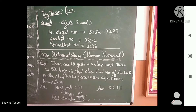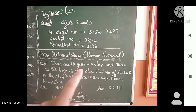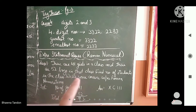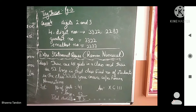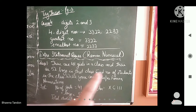Next is an extra statement question based on Roman numerals. I am going to read the statement first. There are 41 girls in a class and there are 42 boys in that class. Find the total number of students in the class, and write your answer in Roman numeration.